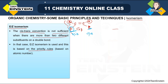The extra step in E-Z compared to cis-trans is deciding priority based on priority rules. In the primary sense, priority rules are based on atomic number. If there is a single atom, it is easy — for example, bromine gets higher priority than chlorine because bromine has a higher atomic number. For larger groups, we will also see what to do based on priority rules.